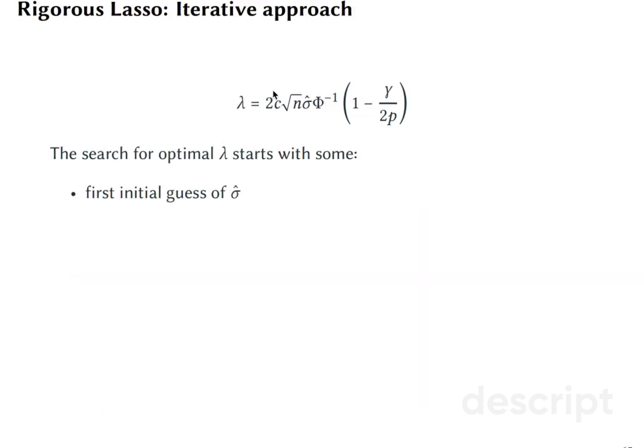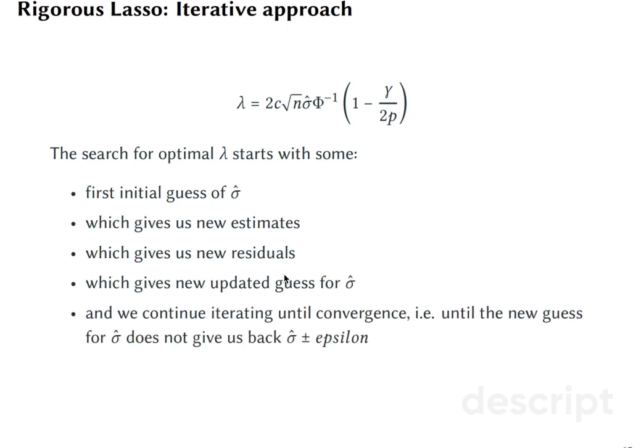So what do you do? You do an iterative approach for searching optimal level of lambda. You first get a first initial guess of sigma, you plug it in this formula, find lambda. It gives you new Lasso estimates. You get new residuals. You estimate the standard deviation of those residuals. You update your guess for sigma and continue iterating until the new guess converges with the old guess. So basically, if there is no difference between the new guess and the old guess, it means that your code has converged.